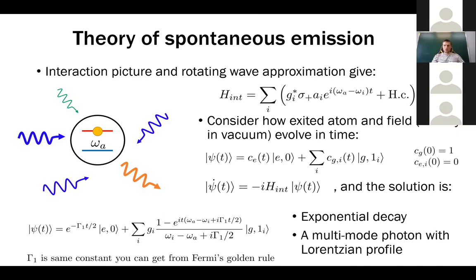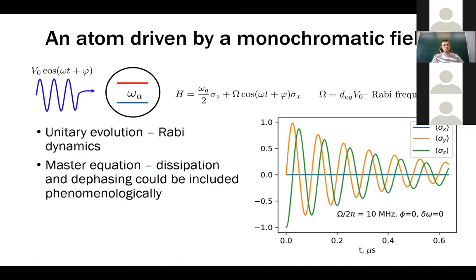In many situations we don't need the full pattern of modes. A very common simplification is a classical driving field — for example from a microwave generator or laser. It is well known that we can remove the field operator from the Hamiltonian and just keep the qubit with its own energy interacting with the coherent classical field. The relevant parameter is the Rabi frequency, or Rabi amplitude, which depends on the field amplitude and the coupling constant.